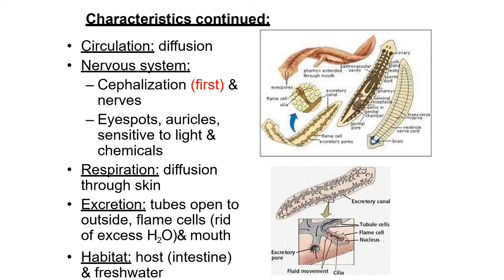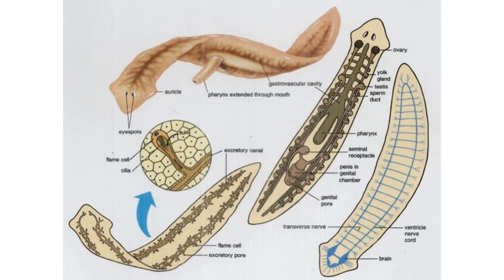You can see different diagrams of Planaria here. Sabse pehle wale mein eye spots dikhe hain, auricles dekh rahe hain aap, aur pharynx extends through the mouth, aur gastrovascular cavity bhi present hai. In another diagram you can see the excretory flame cells — flame cell mein cilia present hota hai, excretory canals hain. You can also see the ovary, yolk gland, testes, sperm duct, pharynx, and seminal receptacle in the diagrams.